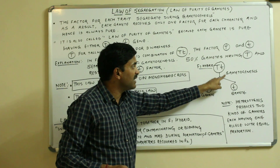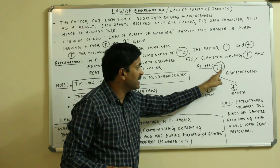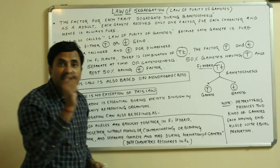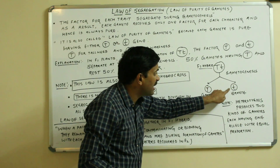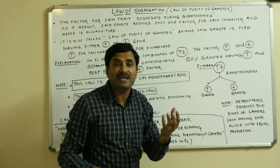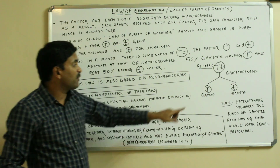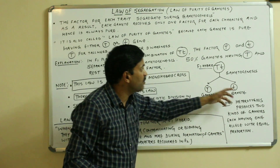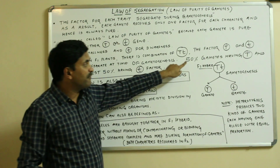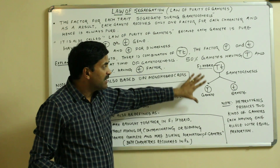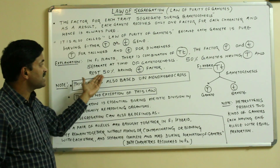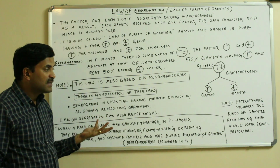You can see that when gametogenesis occurs, they will separate — this gamete will have only capital T and this gamete will have small t. So each gamete is pure for any particular trait: capital T is pure for tallness and small t is pure for dwarfness. Here you can see that 50% of the gametes will have capital T and the remaining 50% will have small t.